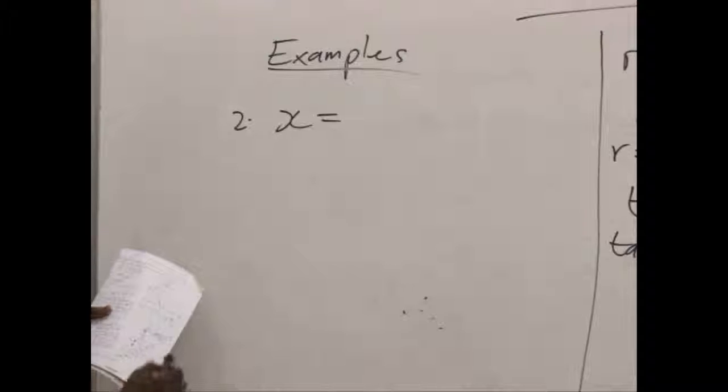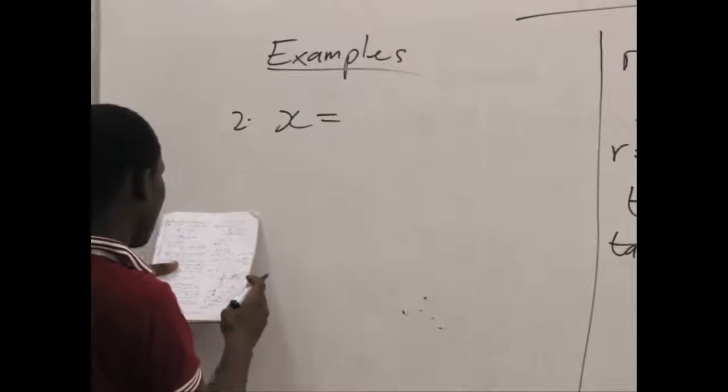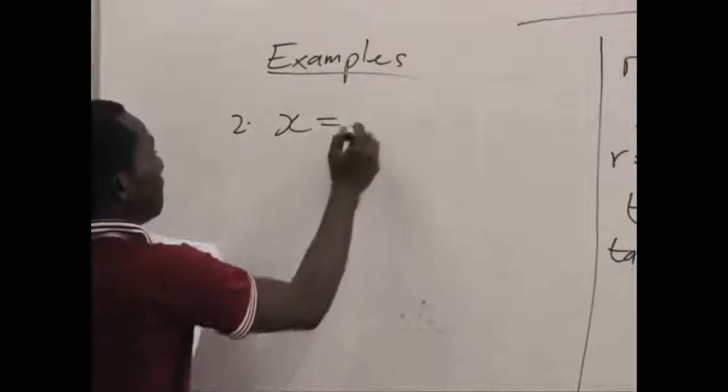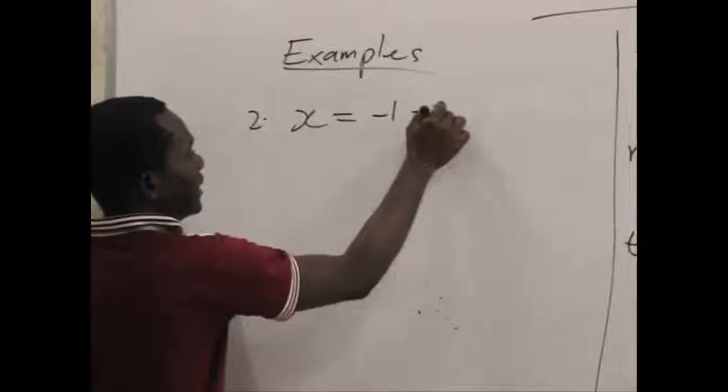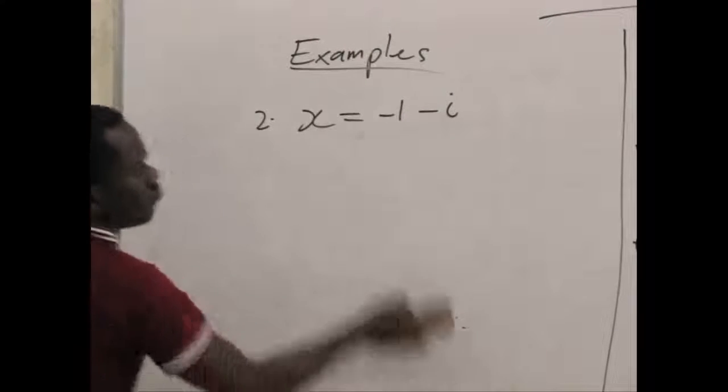Now we assume we have a complex number which is x and the components are minus 1, minus i. Now, how are we to work this?